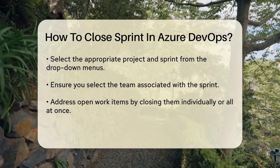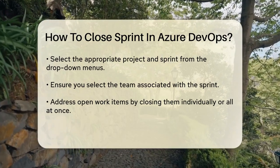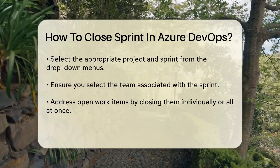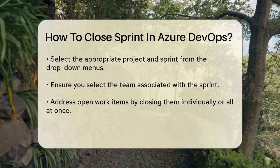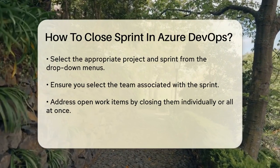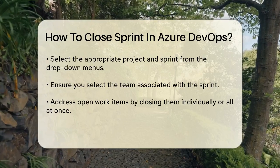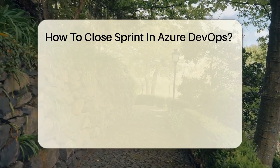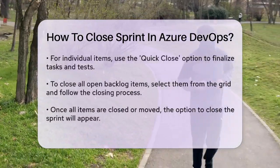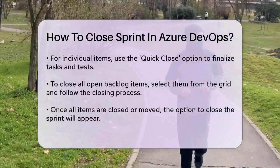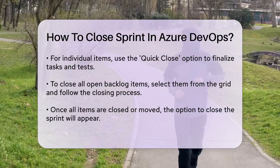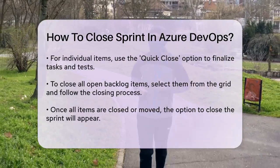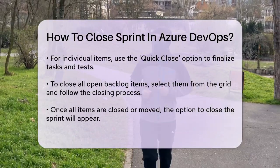Now, let's address the open work items. You can close individual items or all open backlog items for the Sprint. To close individual items, select the item and click Quick Close. This will zero out any remaining tasks and close any associated tests and tasks.